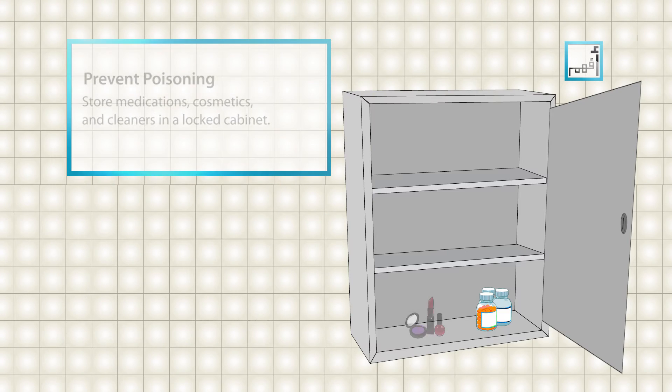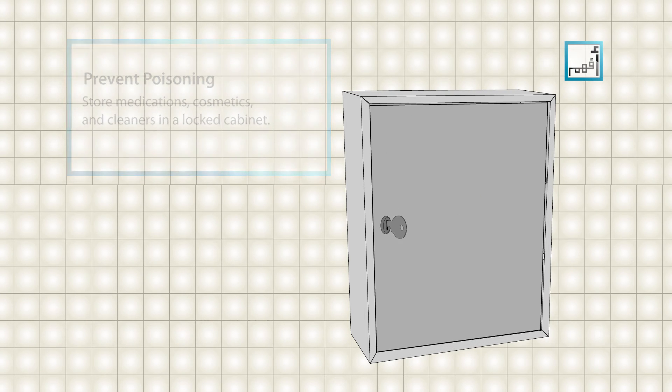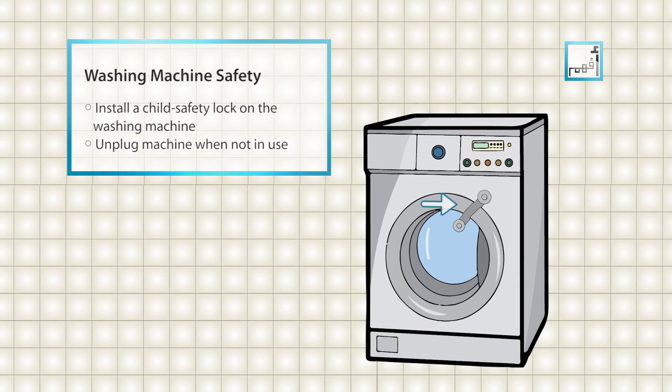Store all medications, cosmetics, and cleaners in a locked cabinet. Install a child safety lock on the washing machine and unplug it when not in use.